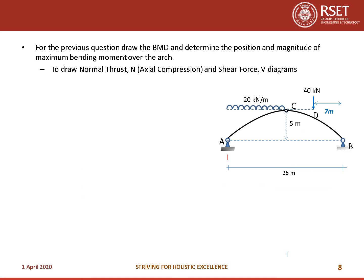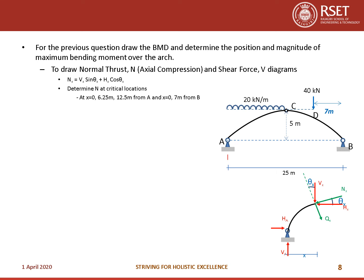If asked to draw the normal thrust diagram (axial compression) or the shear force diagram: NX = VX·sin θX + HX·cos θX for normal thrust; use VX for vertical shear force or QX for radial shear force. Determine N and Q at critical locations. VX comes from ΣFy = 0 and HX from ΣFx = 0 at each section.